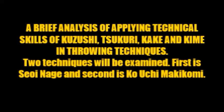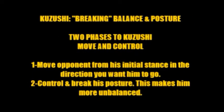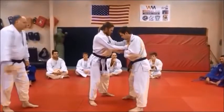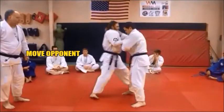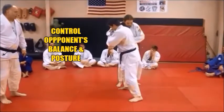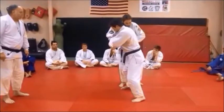Let's take a look at Kazushi, Tsukure, Kake, and Kime — the fourth element or third and a half element in every throw. For Kazushi first: breaking the balance. Two things you have to do. You have to move him into position, and then once you move him into position as part of that moving, you control his posture and break his posture. So you can see here, you move him and you control him right in there, and balance and posture comes right along with it.